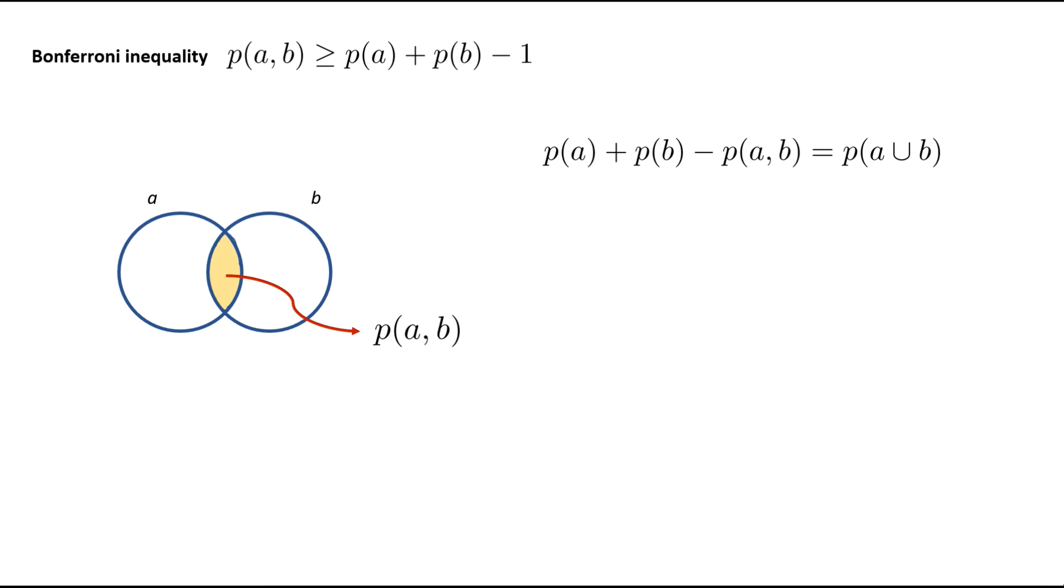If we just added probability of A and probability of B, we would end up double-counting the probability of A, B, which is why we have to subtract it once.